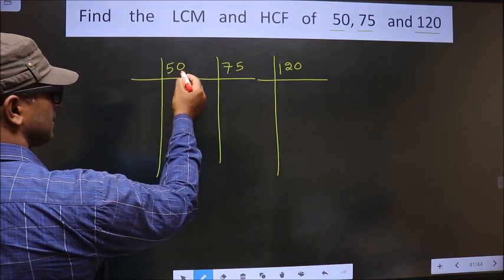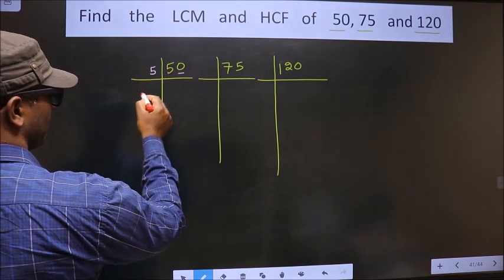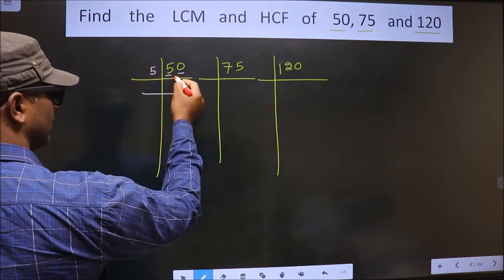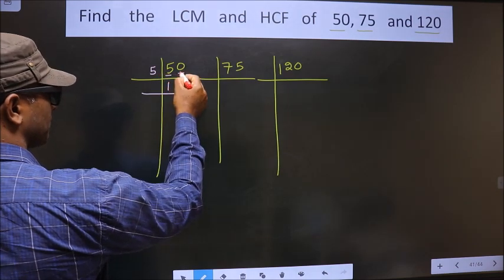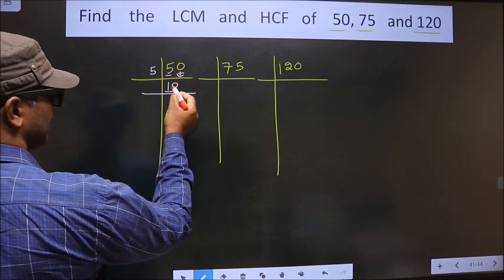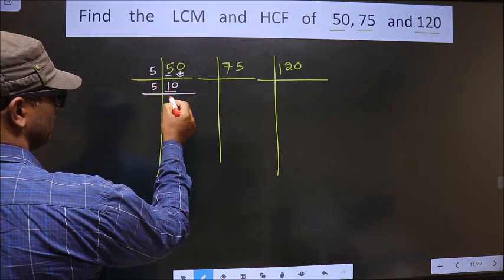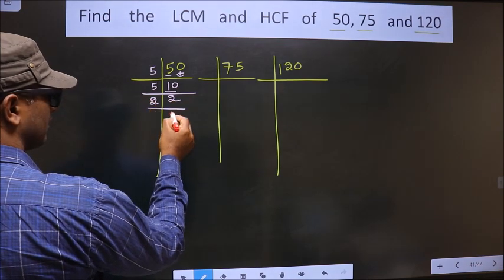Now for this number, last digit is 0, so we take 5 here. First number is 5. When do we get 5 in 5 table? 5 once 5. This 0 carried down. Now here we have 10. 10 is 5, 2 is 10. Now 2 is a prime number, so we take 2 once 2.